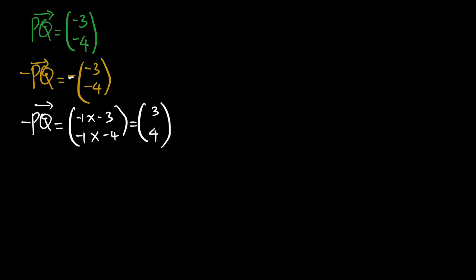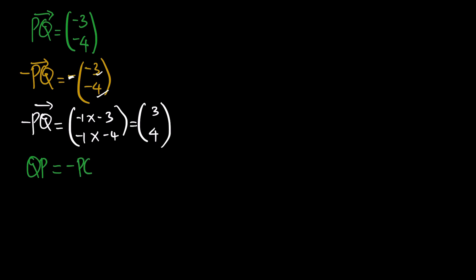The trick is to multiply the negative by the x-component and then the negative by the y-component. Note that the vector QP is the same as the negation — the negative vector of the original vector — so negative PQ equals vector QP.